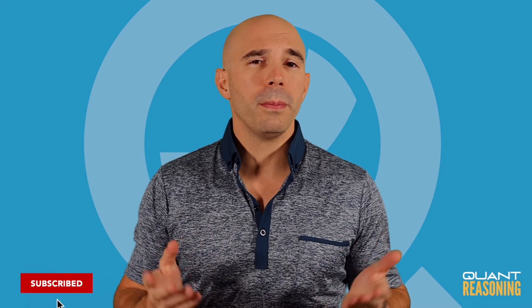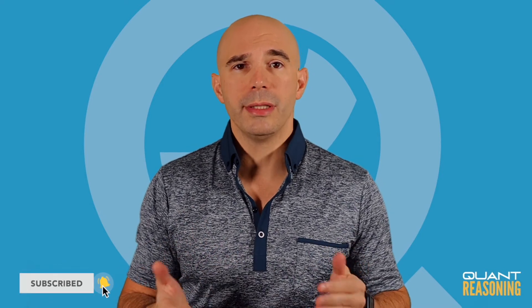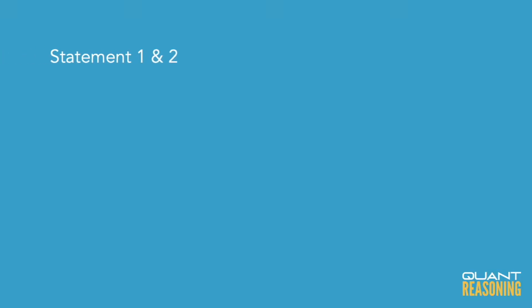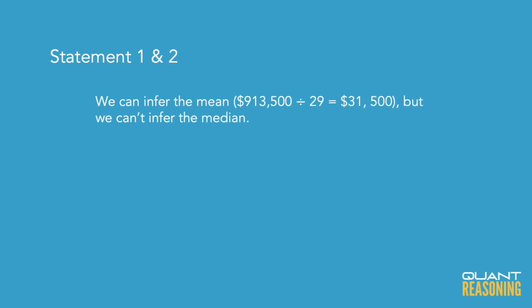Even if we combine the statements — we know the number of employees is 29, and we know the sum of all the salaries — we could infer the mean, or the average salary, by dividing the sum by the number of employees. But to find the median, we're still missing information. The median is the salary of the 15th employee when you arrange them in ascending order, and there's no way for us to tell what that salary is. So the correct answer is E.